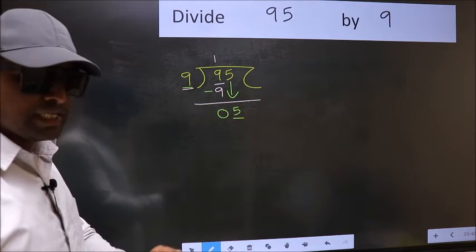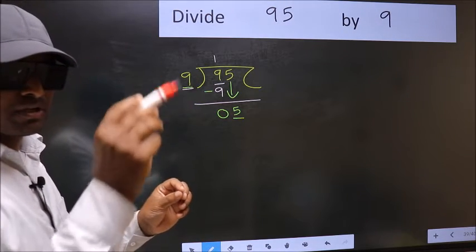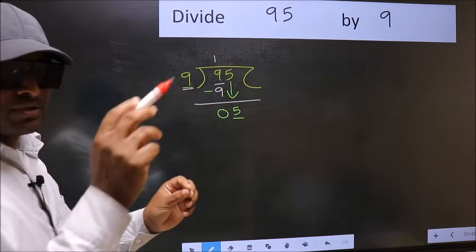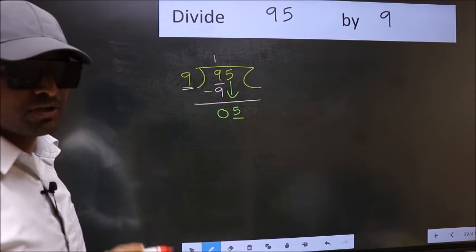Which is wrong. I repeat: bringing the number down and also putting the dot and taking 0, both at the same step, you should not do.